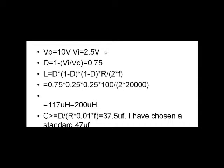In a boost converter we need to choose an inductor. The minimum inductance value is given by this formula: L is equal to D times (1 minus D) squared times R, divided by the frequency of the clock. The frequency we used for the clock is 20 kHz. Usually we choose a frequency that is not audible to humans, because you do not want to hear all this noise. This gives an inductance value of 117 microhenry.